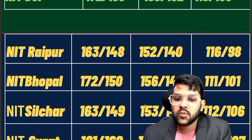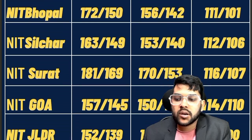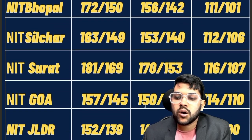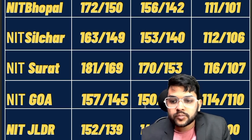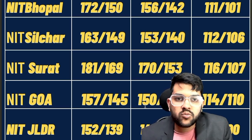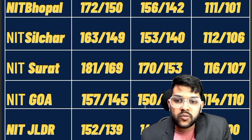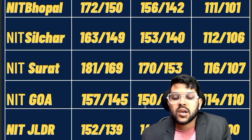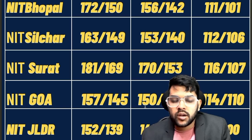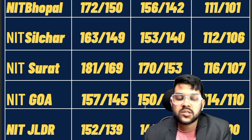For Raipur: 163, 152, 116. For Bhopal: 172, 156, 111. For Silchar: 163, 153, 112. For Surat: 181, 170, 116. For Goa: 157, 150, and 114 marks. This is a very hard-working video because lots of data is available in one single video — it takes lots of effort, so please support this channel by sharing and liking this video, and try to subscribe so you will not miss any update until you get into your dream college.